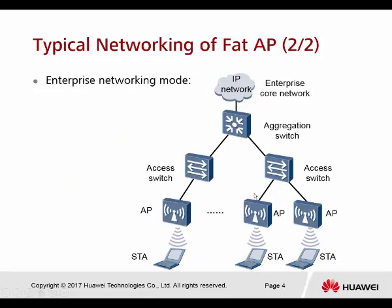For enterprise networking mode, they use the aggregation switch, access switch, and many FAT APs. When they have so many FAT APs deployed in the enterprise network, there will be a lot of overload. When you want to do troubleshooting or change the VLAN and the SSID, you might be facing some problems.